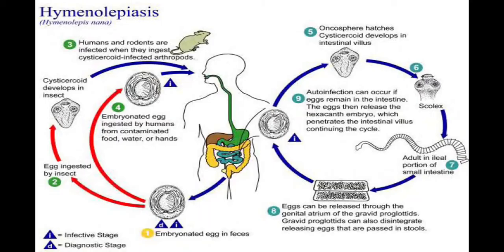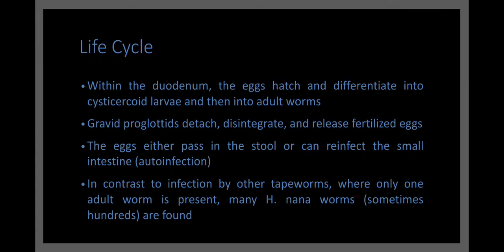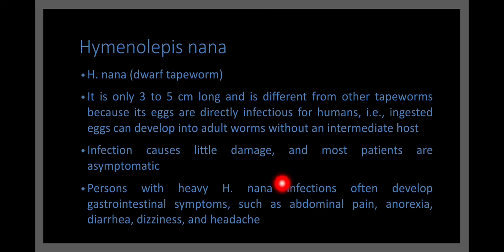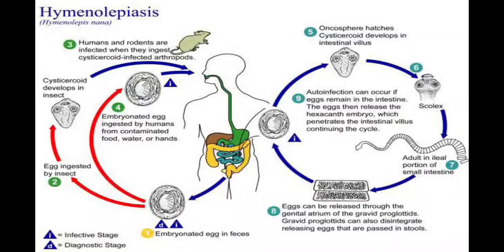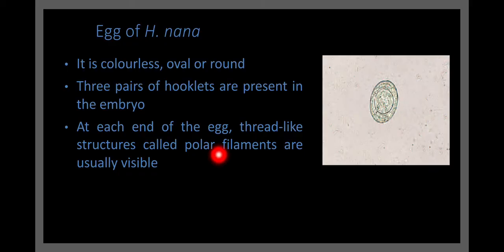The disease caused by H. nana is very mild. If symptoms are present, they include abdominal pain, anorexia, diarrhea, and dizziness. Laboratory diagnosis relies on the detection of eggs or ova of H. nana in a fresh stool sample from the suspected person.